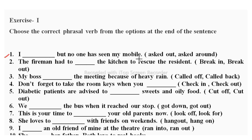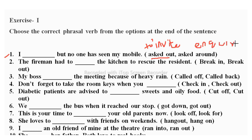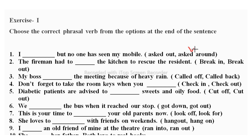First sentence: 'I dashed but no one has seen my mobile.' The options are 'asked out' or 'asked around.' 'Asked out' means to invite someone, while 'asked around' means to inquire about something. Since we are searching for information about the mobile, the correct answer is 'asked around.'